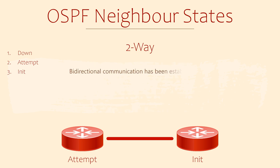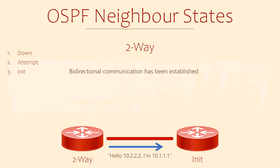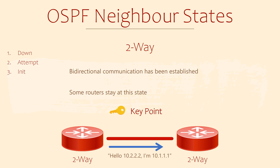The two-way state means that bidirectional communication has been established. Each router has sent hellos, and each router has seen its own router ID in the hello message. Once routers are at this point, they've done their checks and are happy to be neighbours. For a broadcast network, this is where DR and BDR elections take place. Any routers that are DR others will not move past this state, unless a DR or BDR fails and they get promoted. The two-way state is a key milestone — the routers are essentially neighbours at this point.